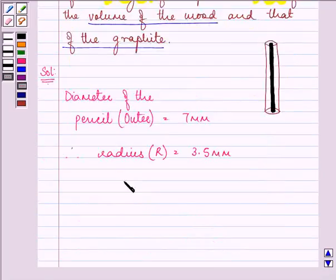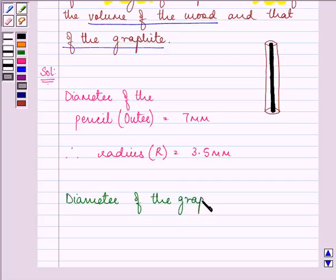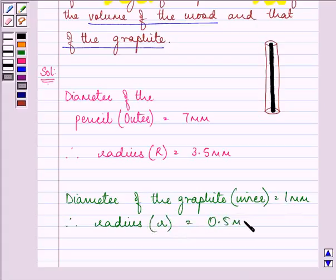The diameter of the graphite, which is also in the shape of a cylinder inside, is given as 1 mm. Therefore the radius, small r, will be equal to half of it, which is 0.5 mm.